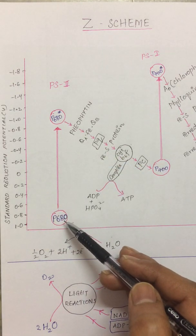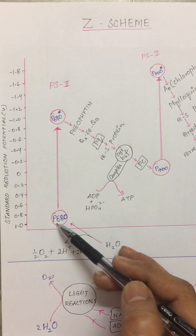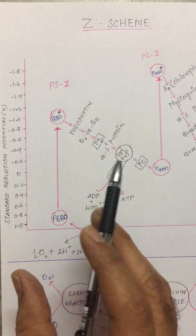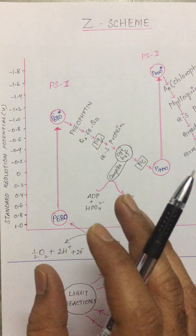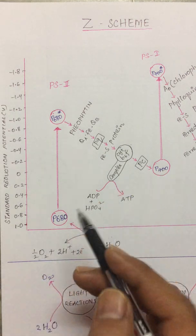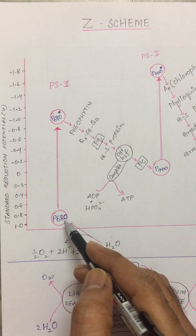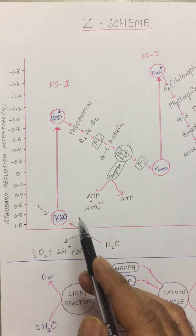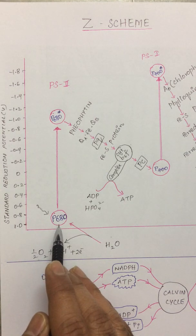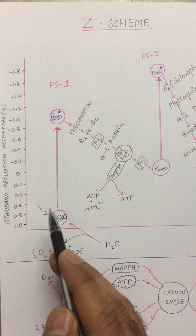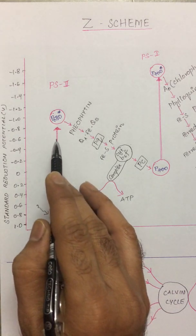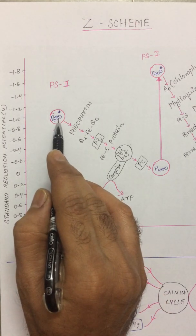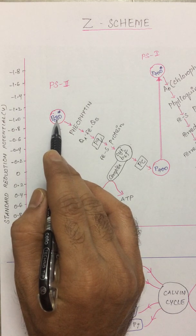Let us start with Photosystem 2. The active site of the Photosystem 2 complex contains a special pair of chlorophyll A molecules, held very closely together in a particular orientation. This pair is referred to as P680, since its major absorption band has a peak at 680 nanometers. Whenever a photon — also called an exciton — hits this P680 system, it excites P680.